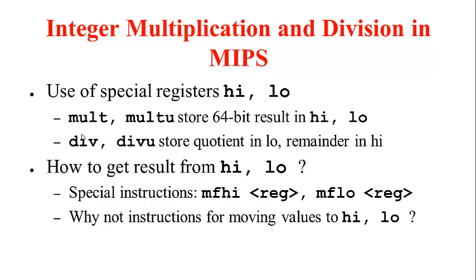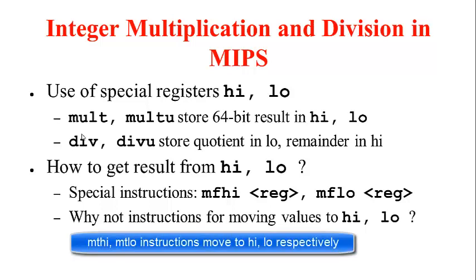Just like multiplication needs a 64-bit result, integer division also has a different need for using 64 bits. In division, we have a quotient and a remainder, so the DIV and DIVU instructions store the quotient in LOW and the remainder in the HIGH register. Since HIGH and LOW are not part of the regular 32 MIPS registers, MIPS has special instructions MFHI (move from HIGH) and MFLO (move from LOW), each with a single register argument, for moving the value from HIGH or LOW to the given register.